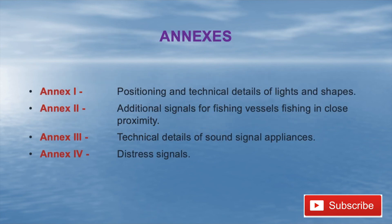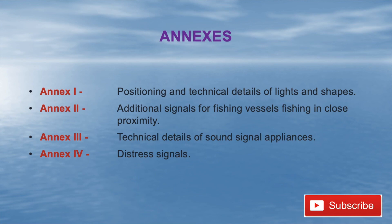There are four annexes. Annex 1 gives position and technical details of lights and shapes. Annex 2 covers additional signals for fishing vessels fishing in close proximity — what signals they should exhibit. Annex 3 gives the technical details of sound signal appliances. Annex 4 is one of the most important and will definitely come up in discussion — it covers distress signals. We'll see everything in detail in later videos.